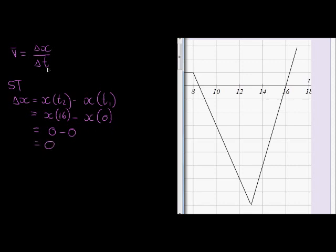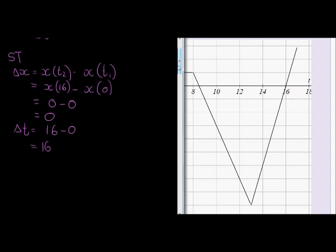Now it doesn't really matter what time is, but for the sake of this question we'll still do that. The change in time is 16 minus 0, because time 2 minus time 1 is 16 minus 0, which equals 16.